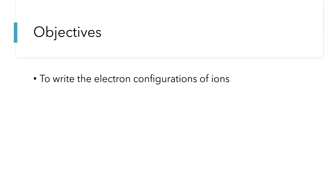In this video, we looked at how to write the electron configurations of ions. It follows the same pattern as writing configurations for neutral atoms, but you land at a different total number of electrons. However, when looking at transition metals, keep in mind that when they ionize, they are going to lose the S electrons first before they lose their D electrons.